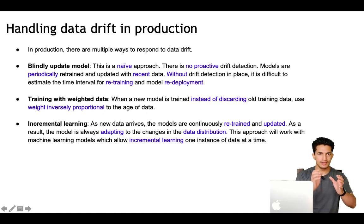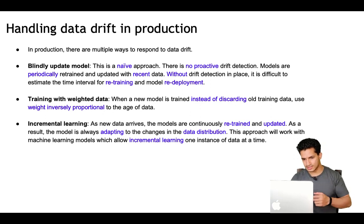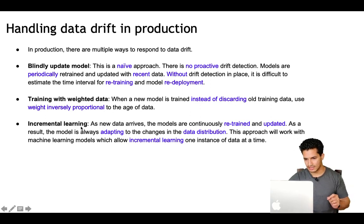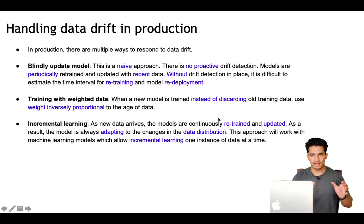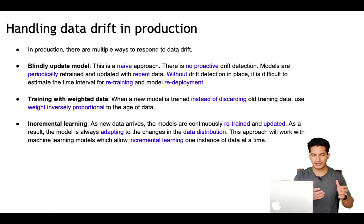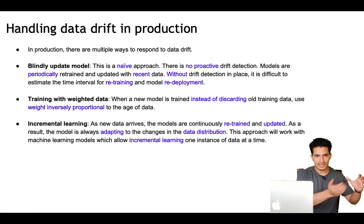When the model is trained, each instance is given a weight inversely proportional to its age, so recent data gets more weight and old data gets less. The third and best approach is incremental learning. When new data arrives, instead of discarding the old model, we retain the weights learned by the old model and do an incremental learning update. As a result, the model is always adapting to changes in data distribution while also using old training weights. This approach only works if the ML model allows incremental learning — for example, neural networks allow it. Incremental learning also takes less time to train since the model is already trained from past data and we are training for just a few more epochs.